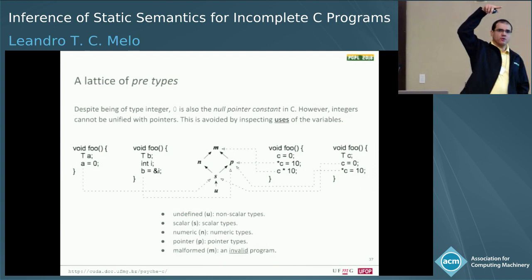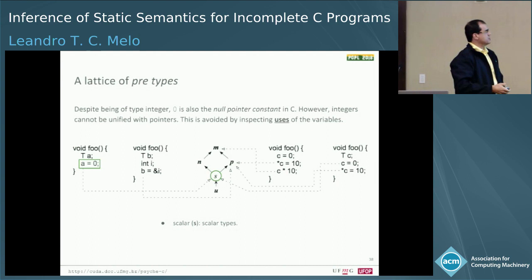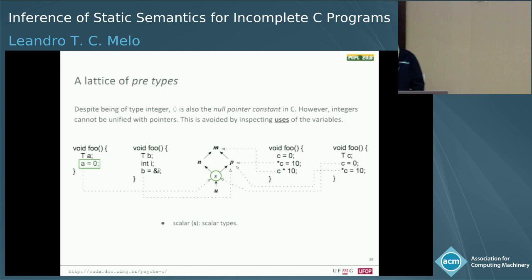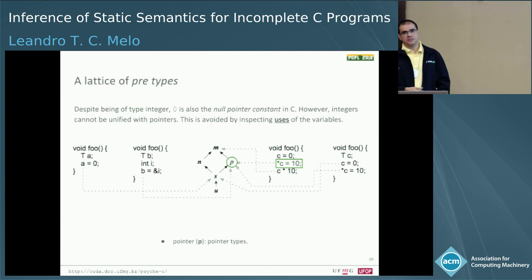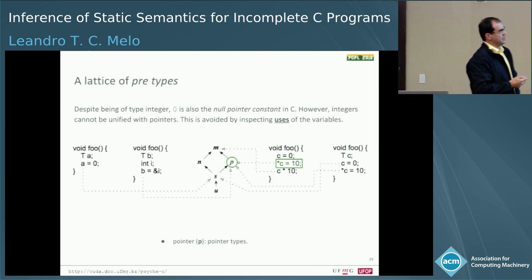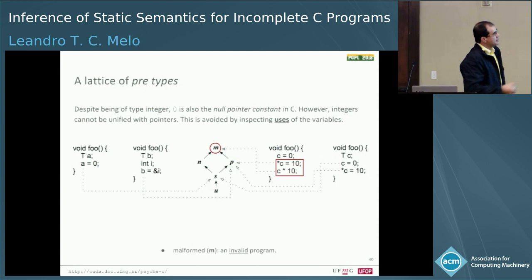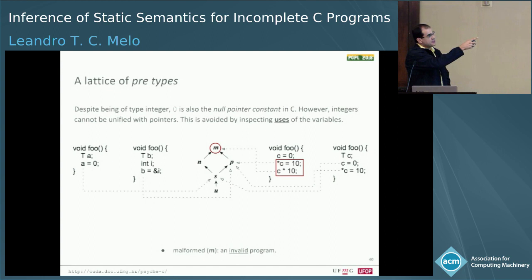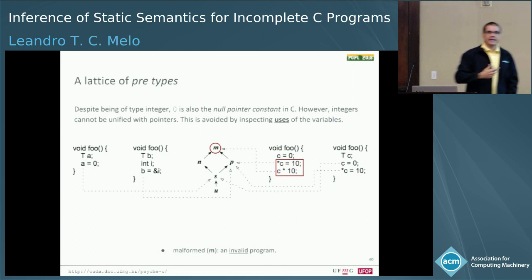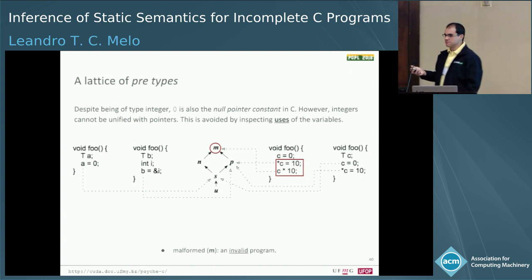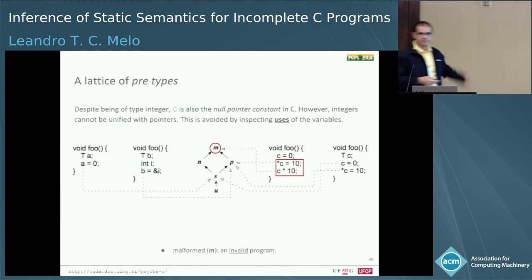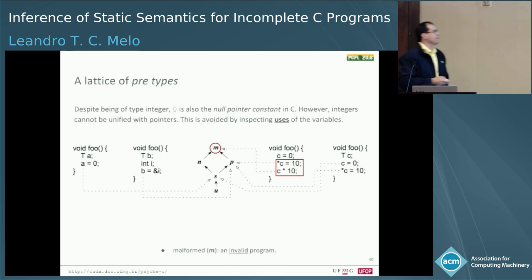In this case, when we see that A equals zero, we already know it must be a scalar type. If we see a dereference, we know we must be dealing with a pointer type. And this is the case where we have a dereference and also a multiplication — in C, pointers cannot appear in multiplication — so this program takes our lattice to the malformed state. The result is our pre-types defined.